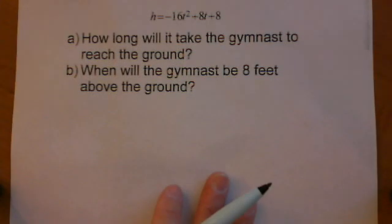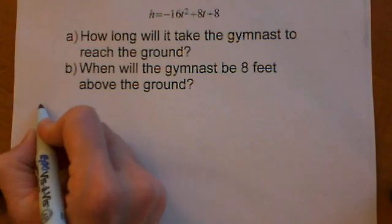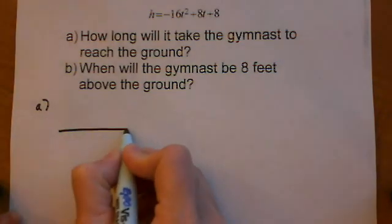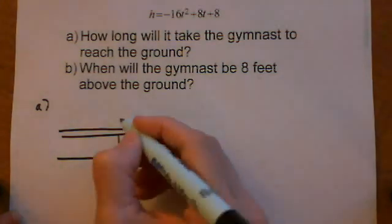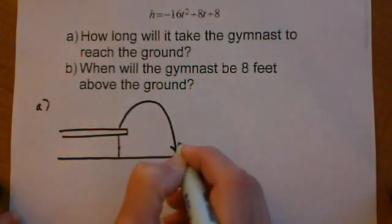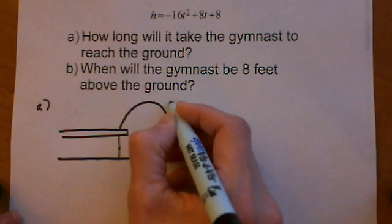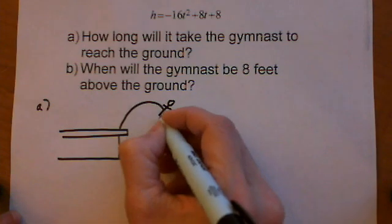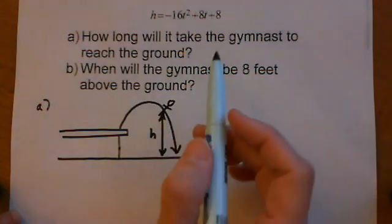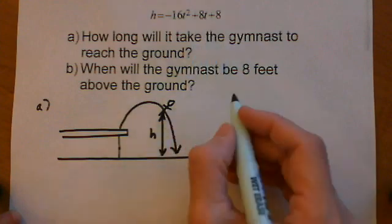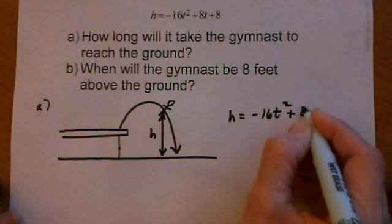So like the last problem, the first thing we want to do is draw a picture of our situation, and that's going to help us put all this information together. So Part A, we have the gymnast on the uneven parallel bars, and she's dismounting and landing on the ground. So her height at a time t is given by the variable h in this formula. So we're going to take this formula, h equals minus 16t squared, and use it to answer the question.